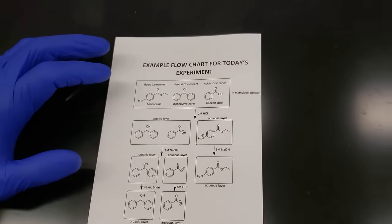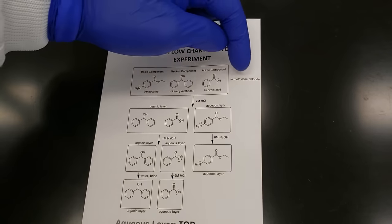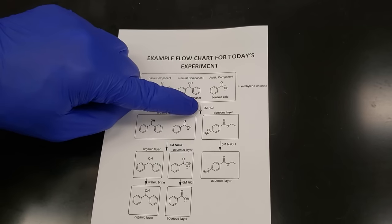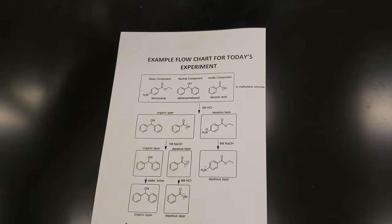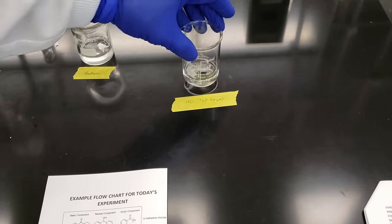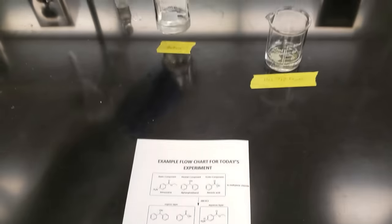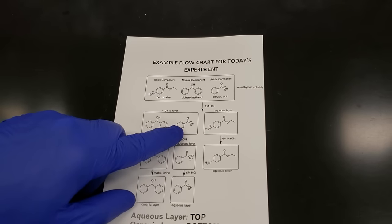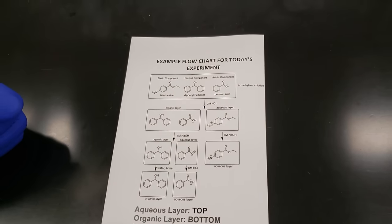If we go back to our flow chart, we started out with all three components in methylene chloride, then added 2 molar HCl and went through our first extraction. We extracted our benzocaine into the aqueous HCl layer — that's what we have here as our HCl top layer. In our organic bottom layer, we have our diphenyl methanol and our benzoic acid derivative. We've carefully labeled these to make sure we don't lose track. Hopefully, we've effectively separated out our benzocaine from the other two components.